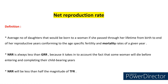And now coming to Net Reproduction Rate. It is the average number of daughters that would be born to a woman if she passed through her lifetime from birth to the end of her reproductive years, conforming to the age-specific fertility and mortality rates of a given year. So in this case, along with the age-specific fertility rates, we are considering mortality rates also. NRR or net reproduction rate is always less than GRR, because it takes into account the fact that some women will die before entering and completing the childbearing years. So NRR will be less than half the magnitude of TFR.